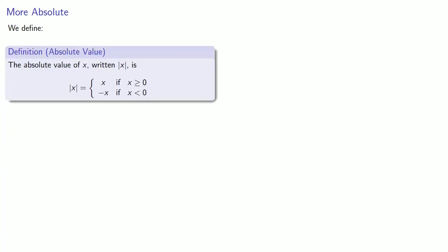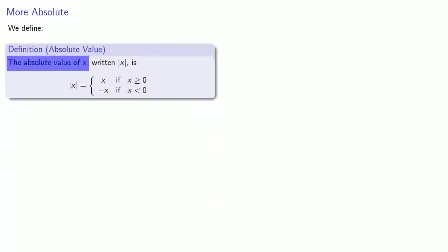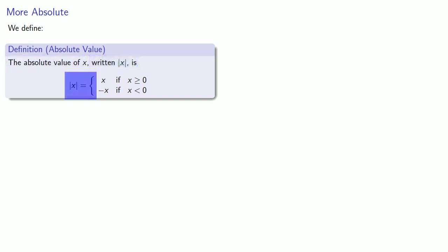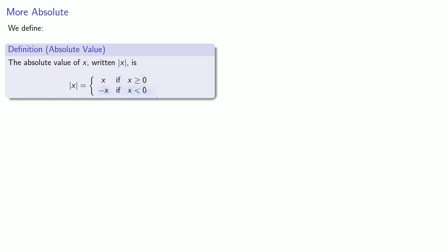We have this nice algebraic definition of absolute value. The absolute value of x, written this way, is either equal to x if x is greater than or equal to 0, or minus x if x is less than 0.